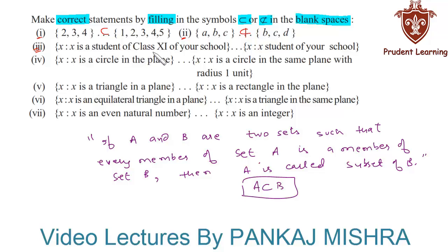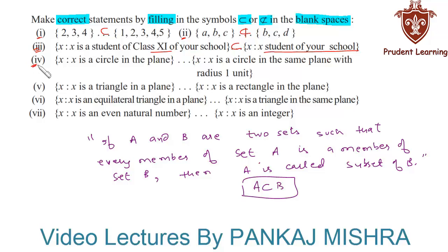Moving ahead to the third section, the first set is {x : x is a student of class 11 of your school} and the second set is {x : x is a student of your school}. Every student of class 11 also belongs to the school. Therefore, the first set is a subset of the second set.